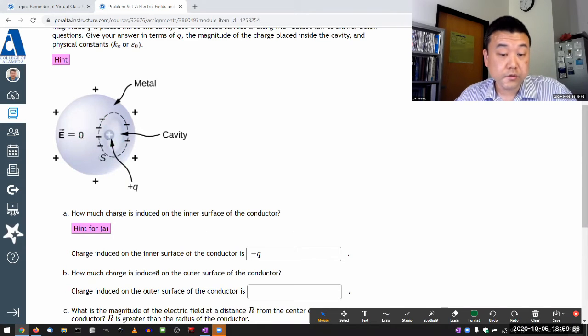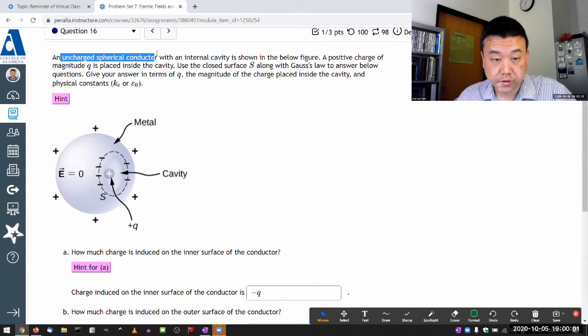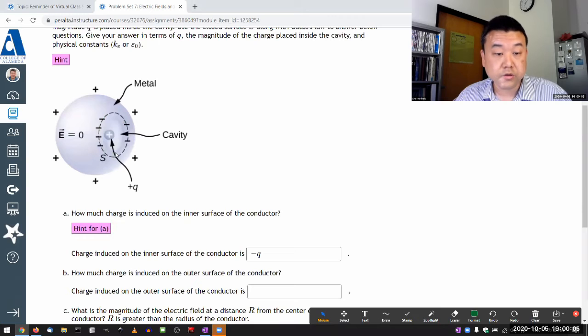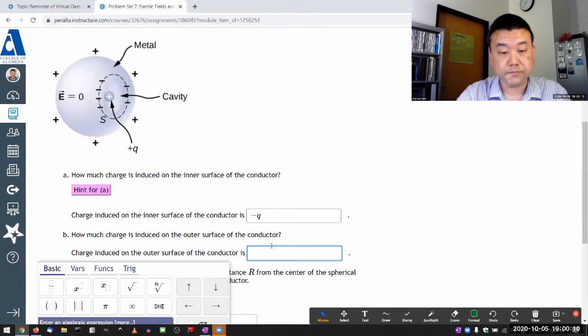And the charge induced on the outer surface of the conductor—because you know that it's an uncharged conductor, so it has net zero charge—if there's a minus Q on the inner surface, there must be plus Q on the outer surface. So it's plus Q.